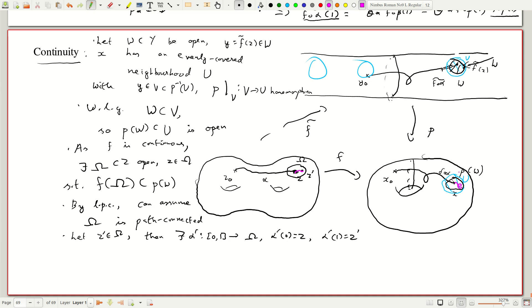And we can lift this by using a local homeomorphism. So that image ends up here.